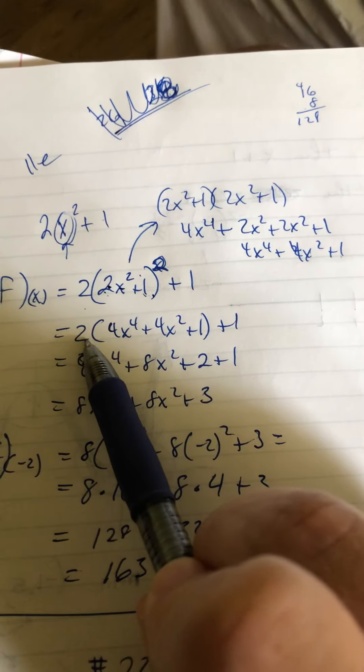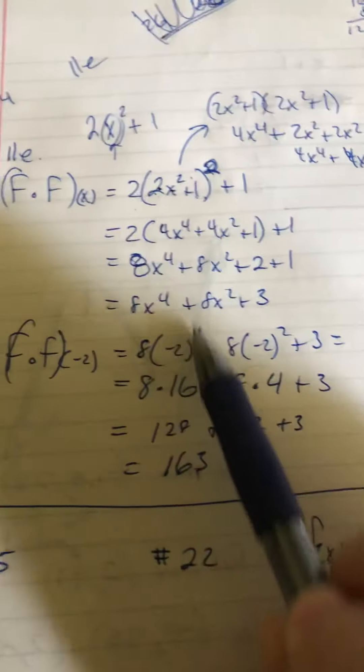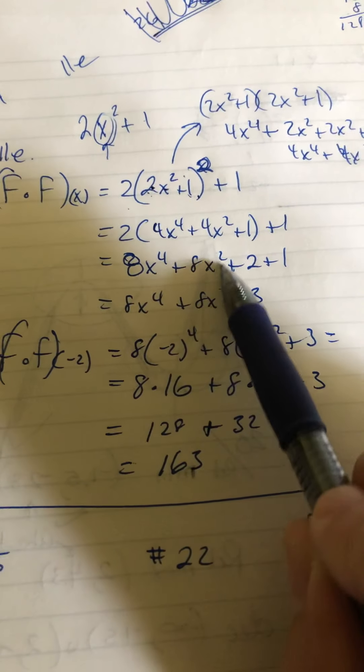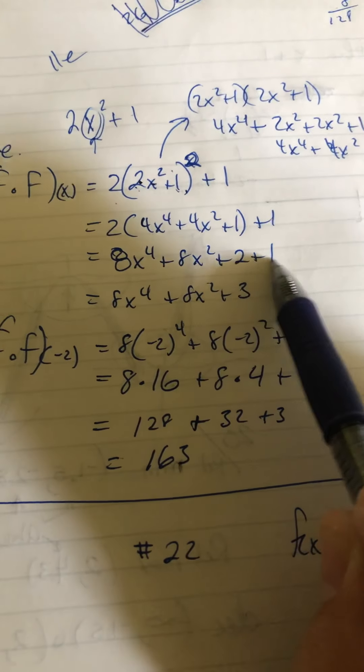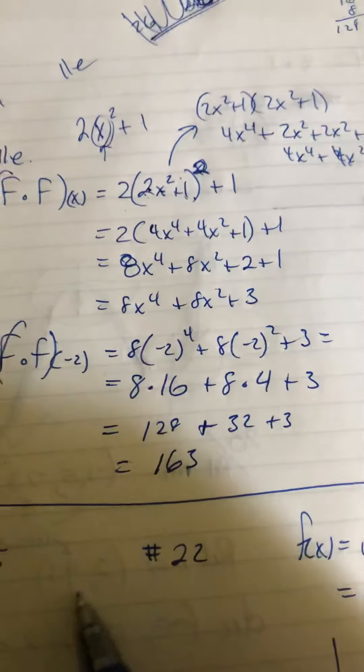Well, that is multiplied by 2, and 1 is added to it. I'm going to distribute the 2 through. 8x to the 4th plus 8x squared plus 2, and then plus 1. Combining these, we get a 3.